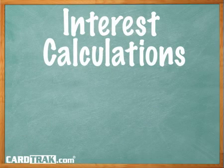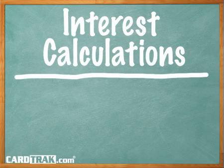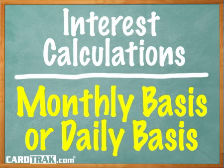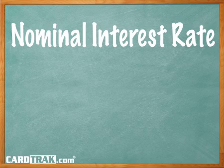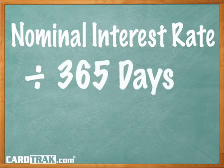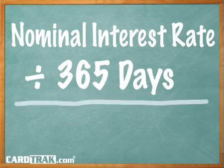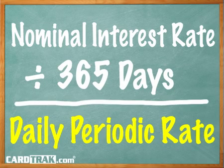Most credit card issuers today charge interest on a daily basis on the average balance. This means that whatever annual interest rate you are paying, the issuer divides the rate by 365 days to calculate a daily periodic rate.